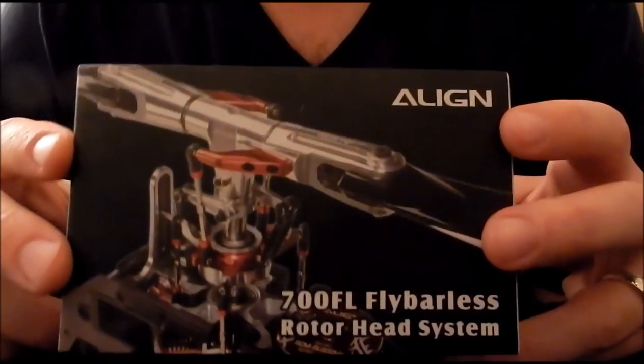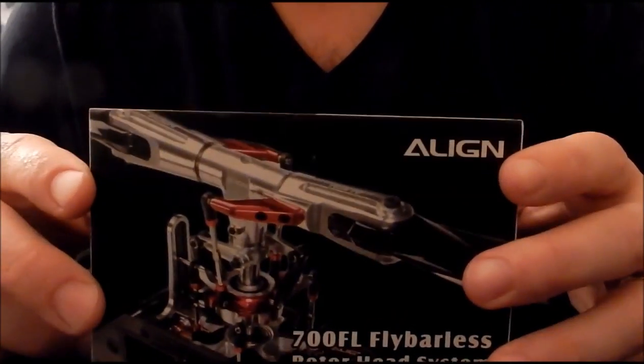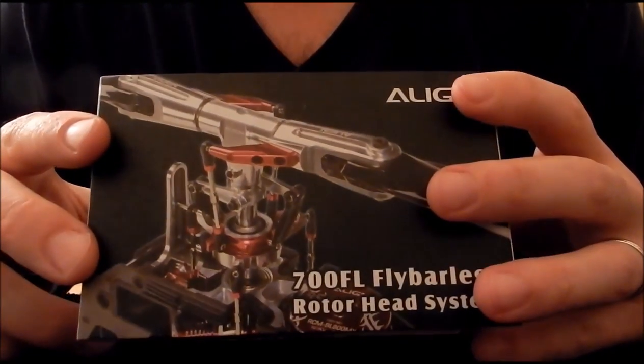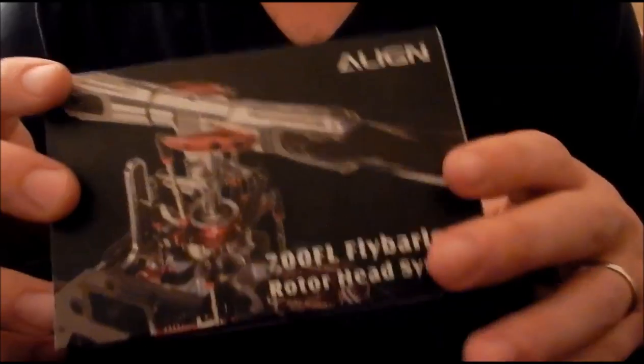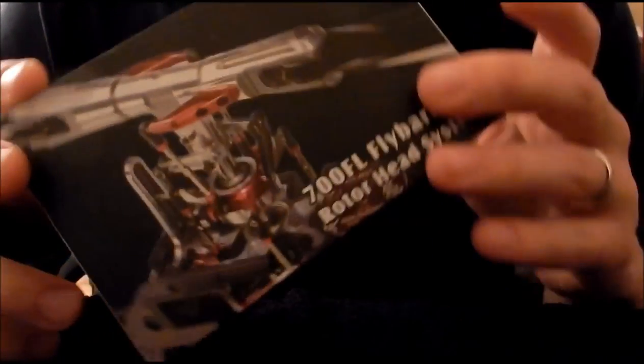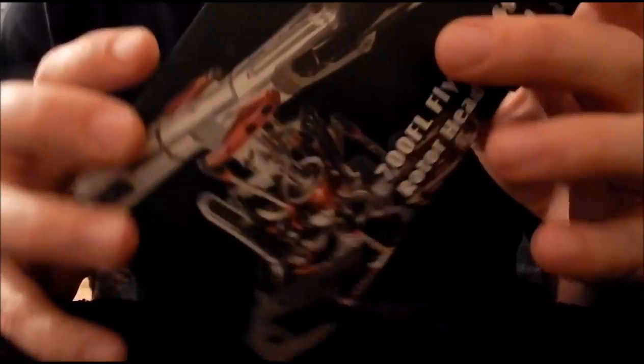The kit comes with pretty much everything. You will need to purchase separately the 700 FL main shaft, part number H70H003XXT, and the conversion kit part number is H70H002XXT.